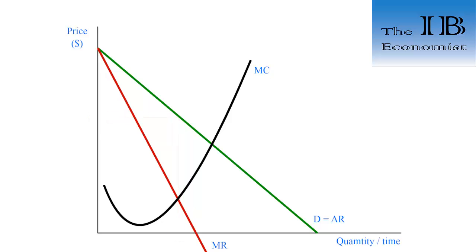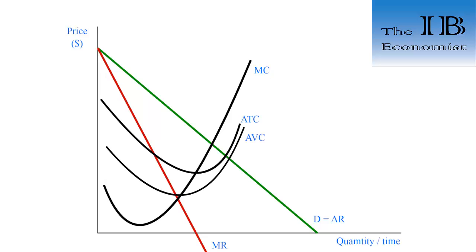Next we add the average total cost. Remember the ATC first falls, decreases at a slower rate, and then increases more sharply. It is very important that the minimum of the ATC curve is the point of intersection between ATC and MC. Then if needed we add the average variable cost — its minimum should be at the intersection with MC, it should converge with the ATC at higher levels of output, and the difference between ATC and AVC should be larger at lower levels of output.